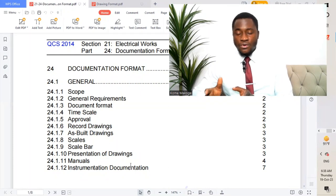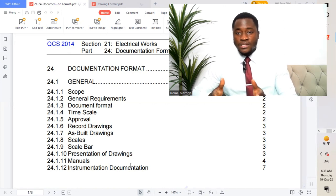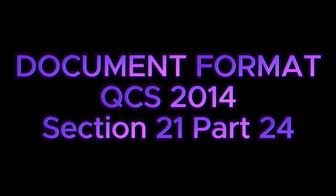IFCs are issued for construction. This set of drawings will be issued to the contractor once the contract has been signed. You're watching Markovic Enterprises. Today we are going to be discussing document format with reference to KCS 2014, Section 21, Part 24.